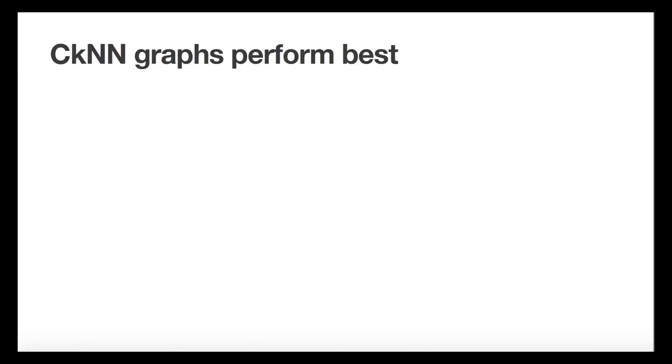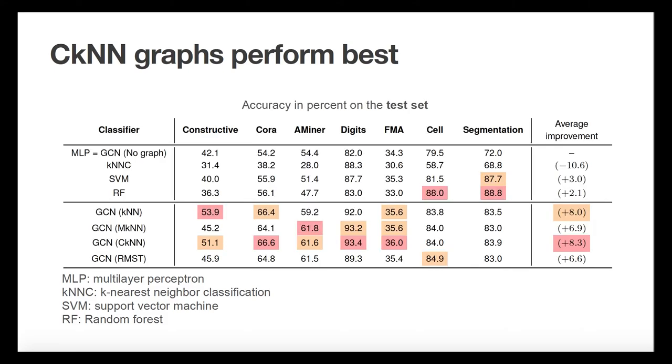Once the edge density parameter is optimized on the validation set, we apply the GCN classifier to the test set. We have compared the performance of four graphless feature-based classifiers: MLP, KNN classification, support vector machine, and random forest, to GCN classifiers with optimized feature-derived geometric graphs. Our numerical experiments indicate that the GCN with feature-derived graphs generally achieve better classification performance than graphless classifiers. In particular, the recently proposed CKNN graph construction performs best across our seven datasets.